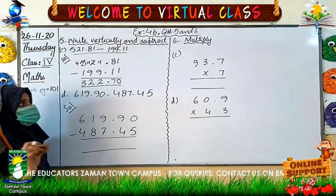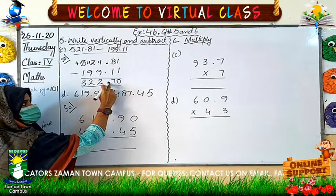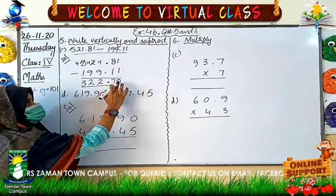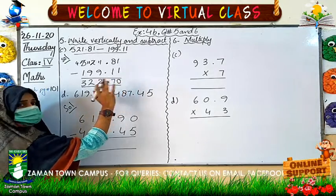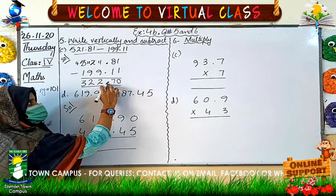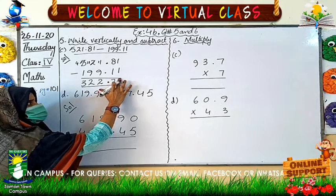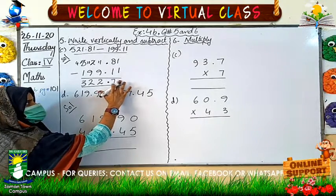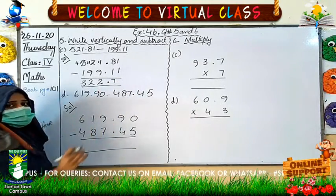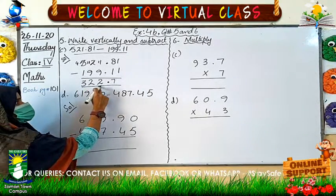I have solved my question. I wrote it vertically first, then subtracted. When I subtracted 521.81 from 199.11, I got 322.70. One thing which is very necessary to tell you: after the decimal sign we have two digits. Zero means nothing, so if our decimal number is ending with zero, you don't need to write that. My answer is 322.7.